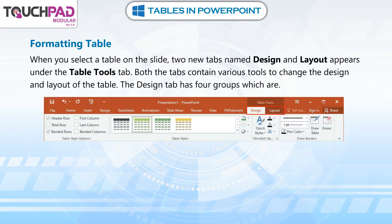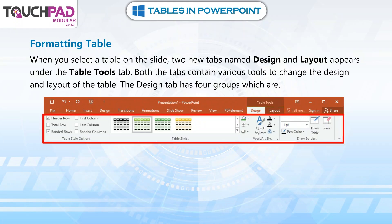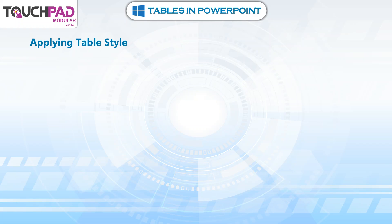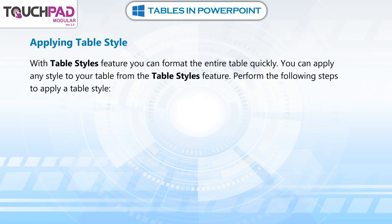Formatting a table. When you select a table on the slide, two new tabs named Design and Layout appear under the Table Tools tab. Both tabs contain various tools to change the design and layout of the table. With the Table Styles feature, you can format the entire table quickly and apply any style of your choice.